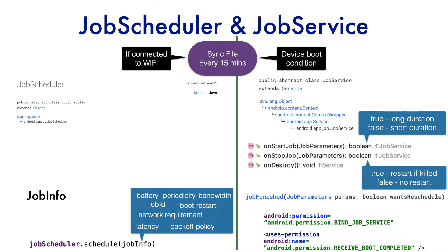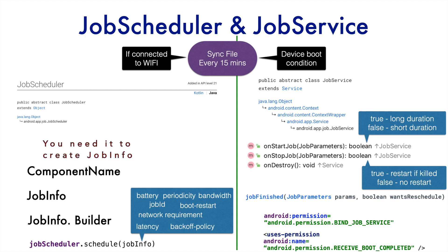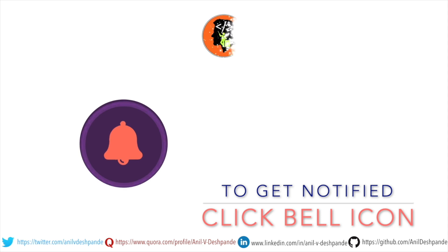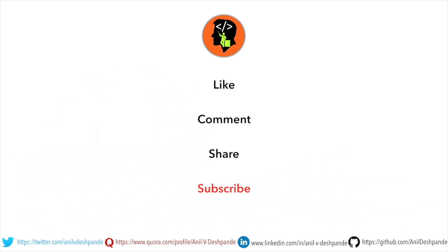You don't create a JobInfo directly — it has a Builder utility class where you pass all the arguments and call build() to get the JobInfo object. You also provide a ComponentName, which in Android refers to an Activity, Service, BroadcastReceiver, or ContentProvider — in this case it is the class that extends JobService. I think we now know enough theory; we'll look at the actual code implementation in the next video. Don't forget to like, comment, share, and subscribe. Take care, bye!